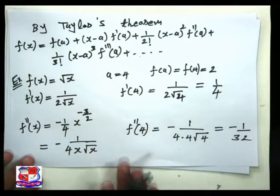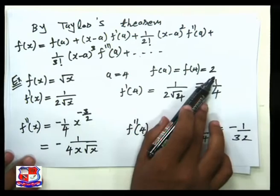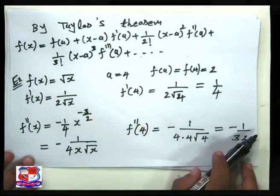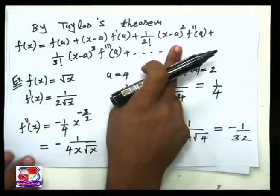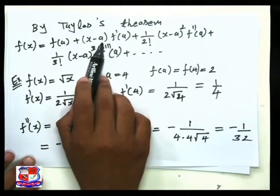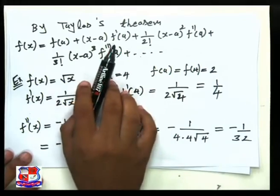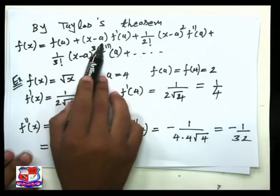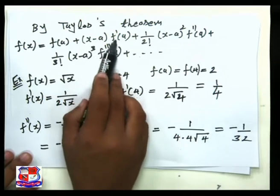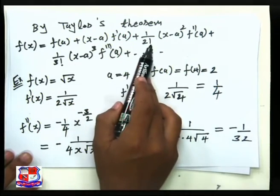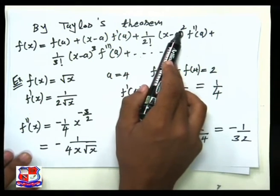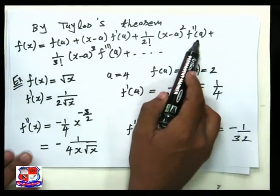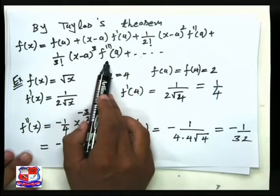Now putting all values into the Taylor formula with a = 4: f(x) = 2 + (x−4)·(1/4) + (1/2!)·(x−4)²·(−1/32) + ··· So we have 2 + (x−4)/4 − (x−4)²/64 + ··· We still need the third derivative to complete the order-3 polynomial.